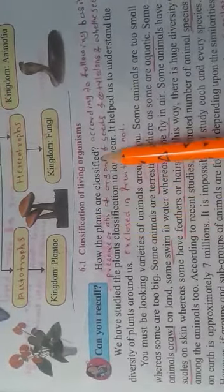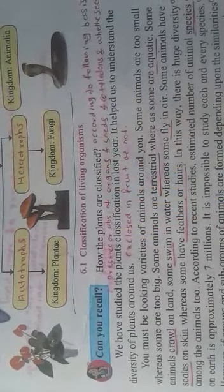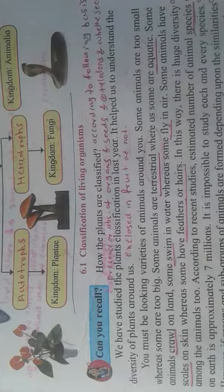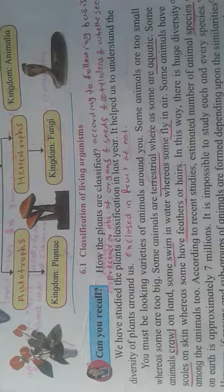Now the second question in your text: how are plants classified? Plants are also classified based on basic characteristics such as the presence or absence of organs or seeds and cotyledons, and whether the seeds are enclosed in a fruit or not. These characteristics are used for the classification of plants.